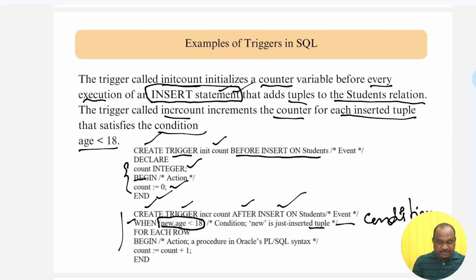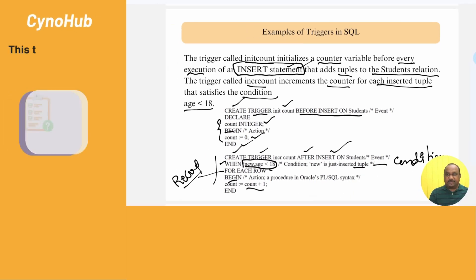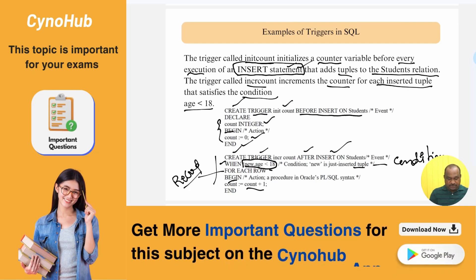For each row means, for every record into the database, for every each row, apply this condition, then begin, increment the counter for the next row, then end.